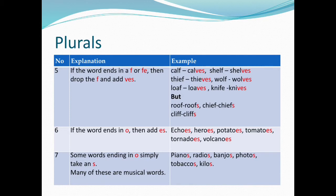6. If the word ends in O, then add ES — echoes, heroes, potatoes, tomatoes, tornadoes, volcanoes. Some words ending in O simply take an S; many of these are musical words — pianos, radios, banjos, photos, tobaccos.